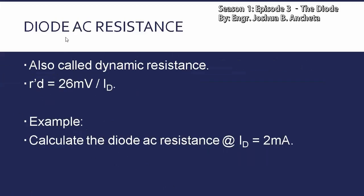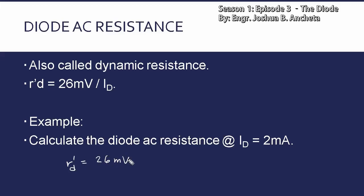Meron din tayong diode AC resistance — this is also called dynamic resistance, represented by R'D, which is equivalent to 26 millivolts over ID. So example: calculate the diode AC resistance at ID equals 2 milliamperes. Solution natin dyan: R'D equals 26 millivolts over 2 milliamperes, and this is 13 ohms.